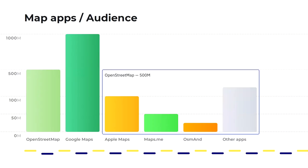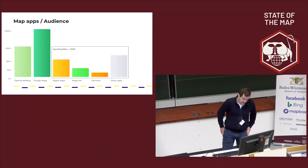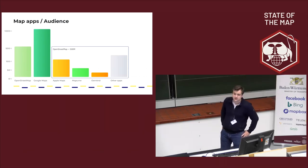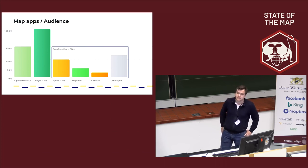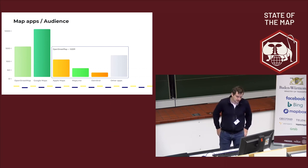Let me first congratulate all of us that OpenStreetMap has reached so many people in the world — it's even hard to count how many people are using OpenStreetMap directly or indirectly. There are probably 30 to 40 large applications with more than one million users, and OsmAnd is one of them. I really hope the audience of OpenStreetMap will continue to grow and eventually become as big as Google Maps' one billion users, and of course exceed that by far.